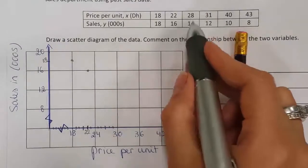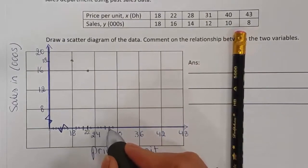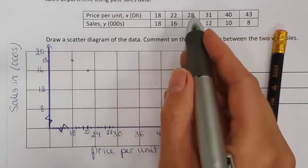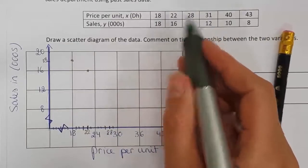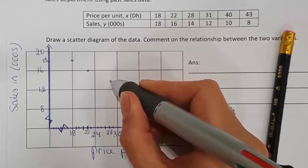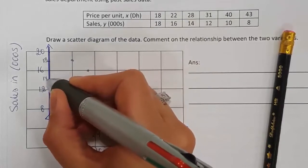28 with 14. This is 24, 25, 26, 27, 28. Together with 14. 28 with 14.